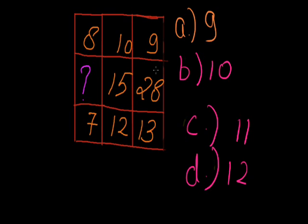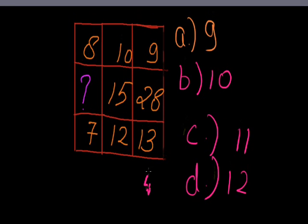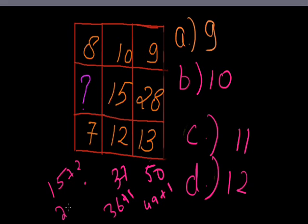Can you get it now? Okay, try to solve it. 9 plus 28, 37, plus 13, 50, and 10 plus 15 plus 12, 37. 15 plus question mark. This is coming 49 plus 1, 36 plus 1, and 25 plus 1. This is 7 square plus 1, 6 square plus 1, 5 square plus 1. So this sum will be 26. 26 minus 15, question mark should come 11.